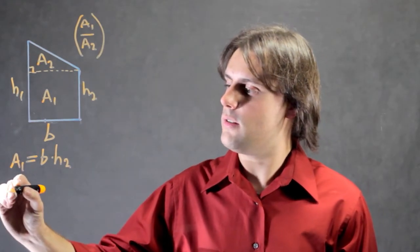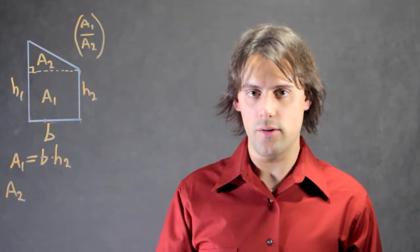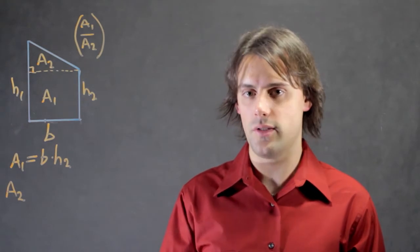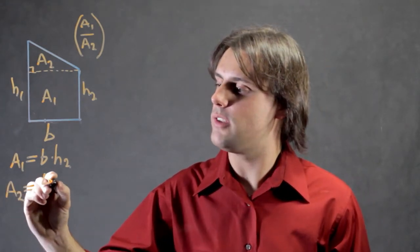For the second area, which is the area of the triangle, I can use the triangle area formula, which is equal to one half times the base of the triangle times the height of the triangle. So I have one half times the base.